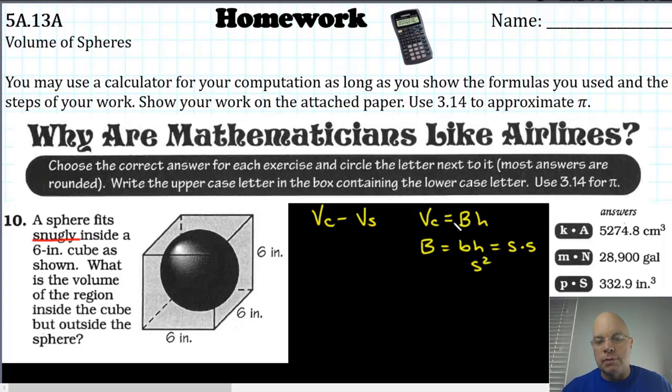When you substitute side squared into this volume of the cube formula, you get side squared multiplied by the height, but the height is also S, it's also the same length as a side since it's a cube. So it's S squared times S. So the volume of any cube is just going to be S cubed, the side length cubed. And then you need to subtract volume of the sphere.